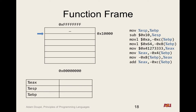We have three important registers: EAX, ESP (the stack pointer), and EBP. Right now, which register do we know the value of for certain? ESP — because the stack pointer is pointing here at 10000 hex. That's the value in ESP. We don't know what's in EAX or EBP — it could be anything.